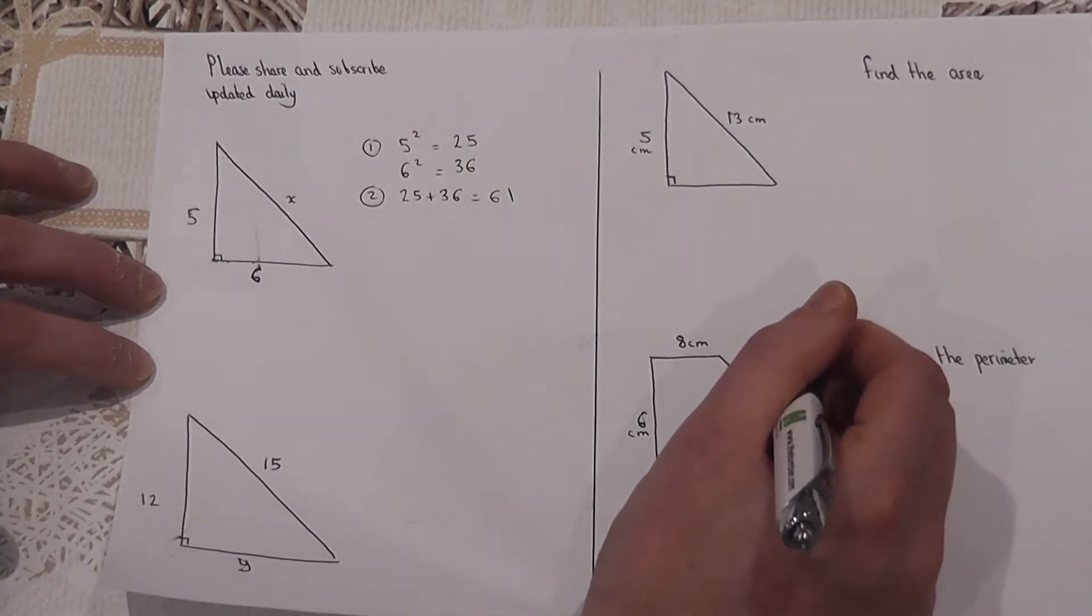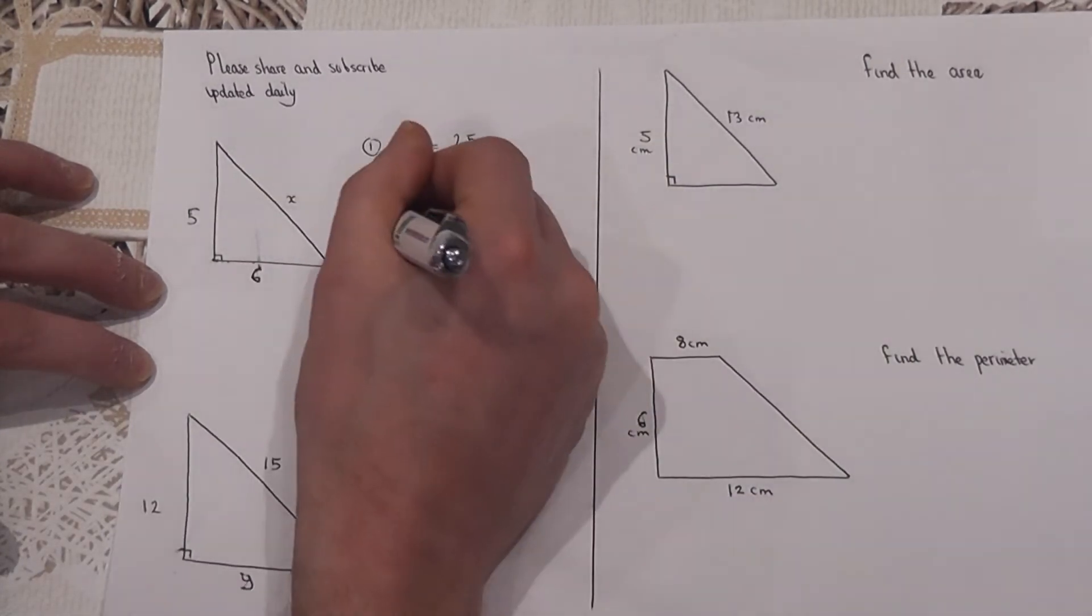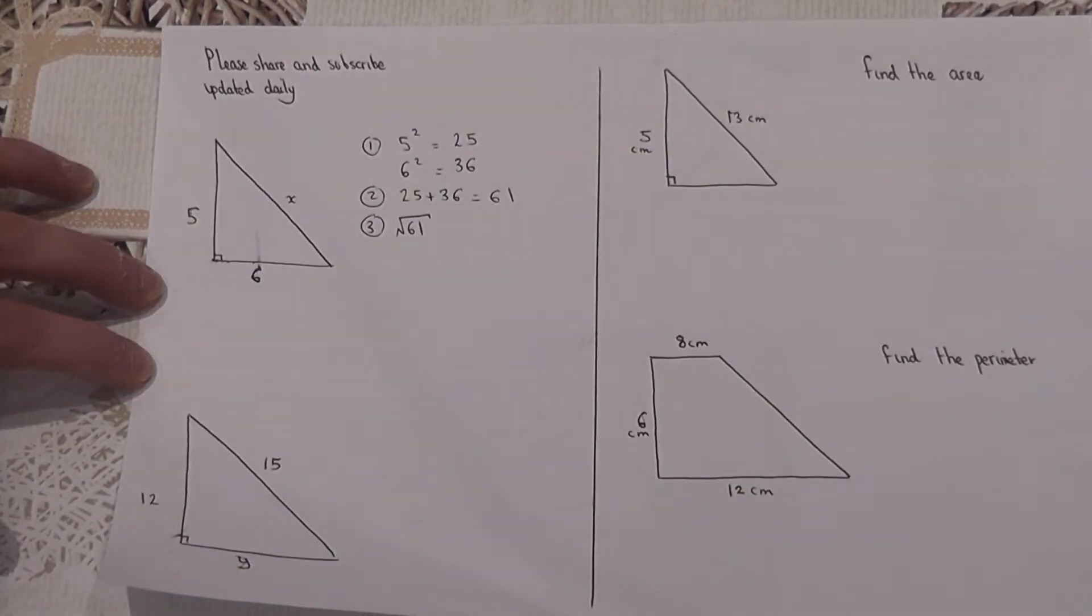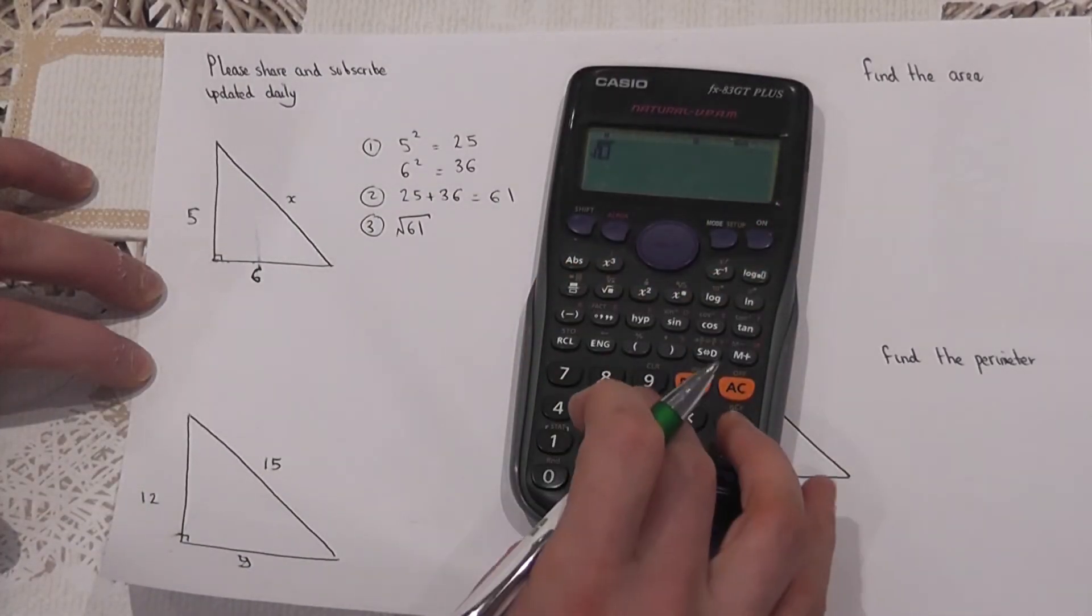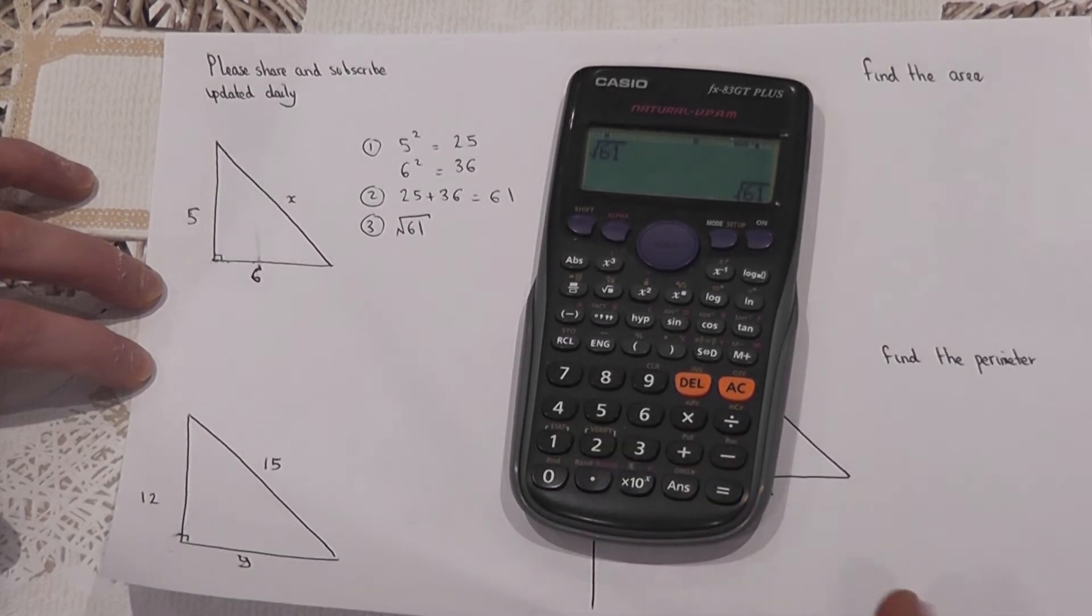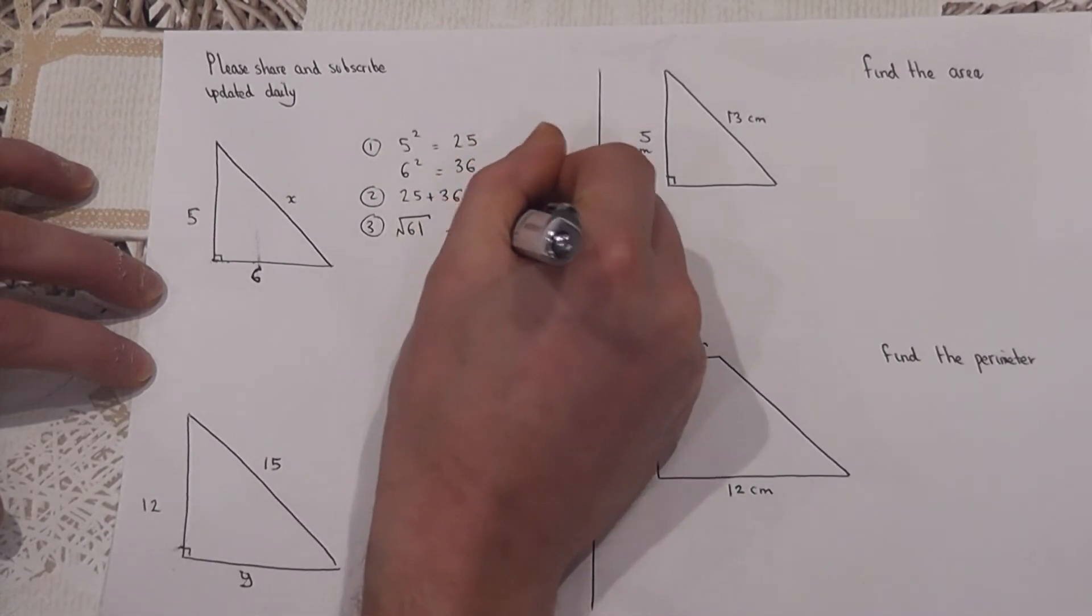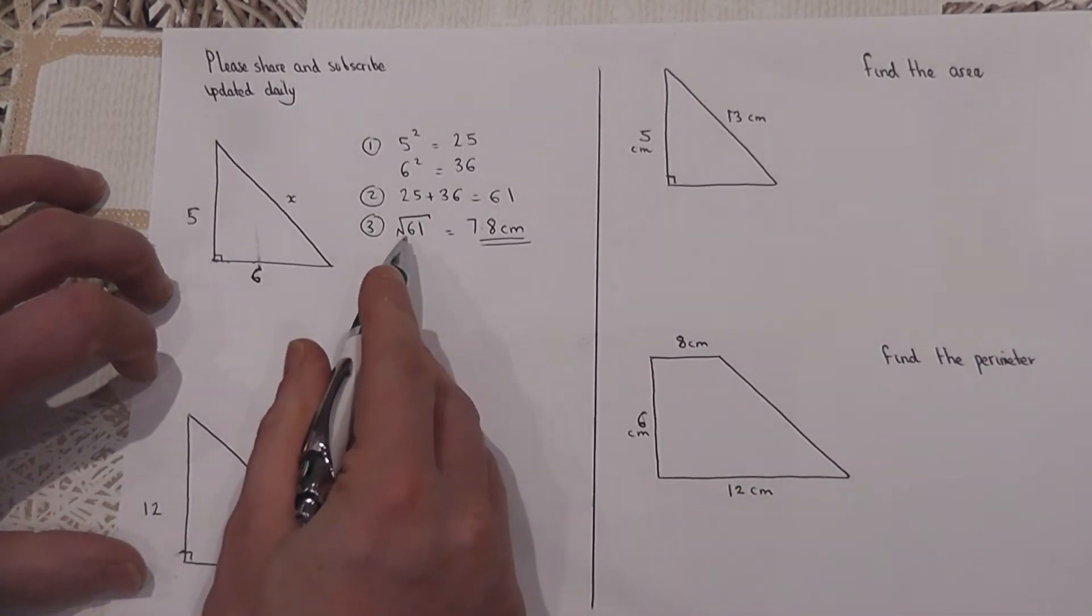What we then do with Pythagoras is find the actual length of the side by finding the square root of this value. So we get our calculator, I'm going to find the square root of 61. We press this button here and we get 7.8 to one decimal place. If we don't have a calculator we can leave the answer as a surd, but if we have a calculator we can give an answer like so.